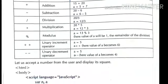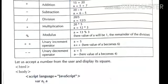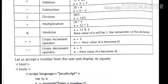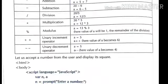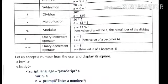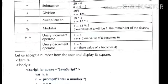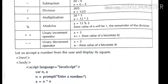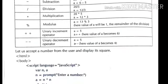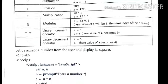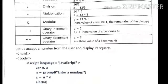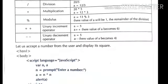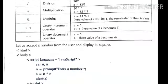Unary operators: double plus (++) is the increment operator. For example, if a equals 5 and we write a++, it increments the value. Similarly, minus minus (--) is a unary operator — if a's value is 5 and we write a--, then a's value will decrease by 1.